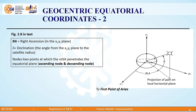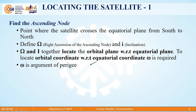We also have nodes — the two points at which the orbit penetrates the equatorial plane. These two points are the ascending node and the descending node. The ascending node is the point where the satellite crosses the equatorial plane from south to north. We define Ω (RAAN) as the right ascension of the ascending node, and inclination i. Together, Ω and i locate the orbital plane with respect to the equatorial plane.